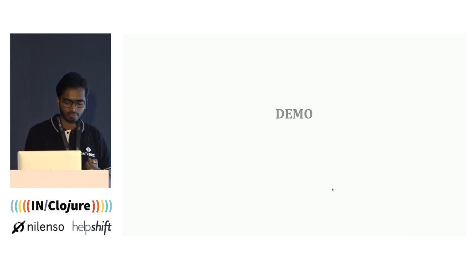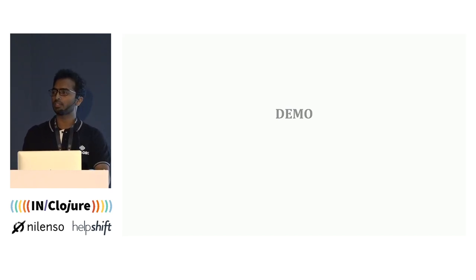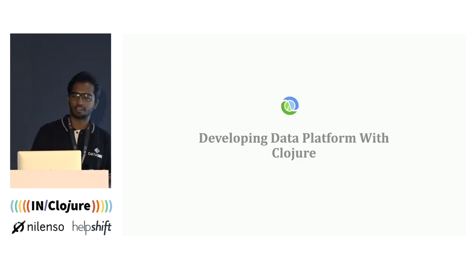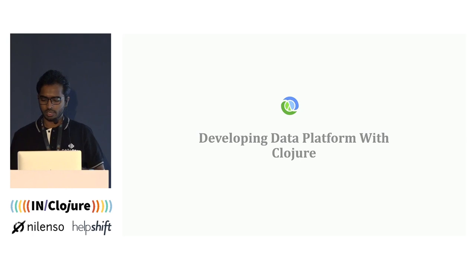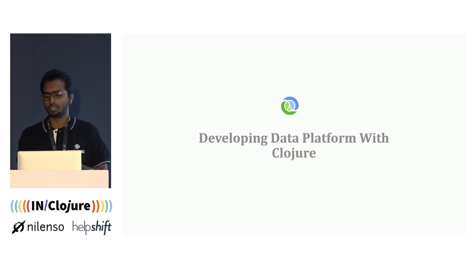Now you have a better idea of how we're using database operations as our events pipeline. The next part is the critical one where we actually developed the whole data pipeline with the help of Clojure. To begin, you need to understand what pain points exist for developing any kind of data pipeline, so it will be easier to understand how Clojure helped us.